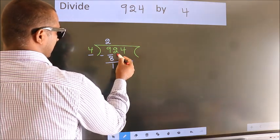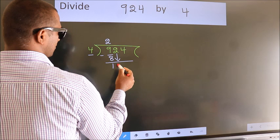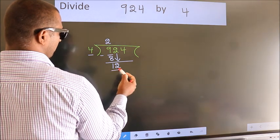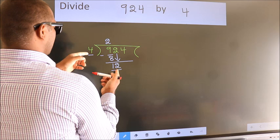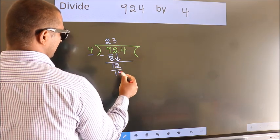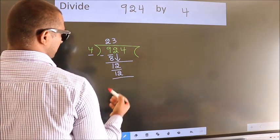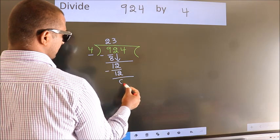After this, bring down the beside number. So, 2 down. So, 12. When do we get 12? In 4 table. 4 threes, 12. Now, we subtract. We get 0.